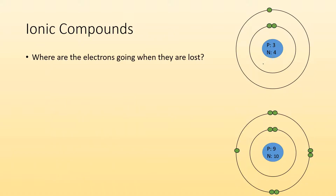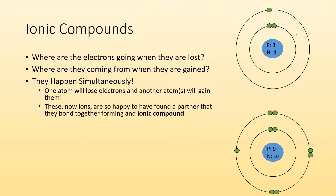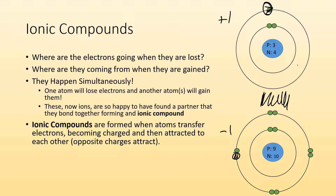So ionic compounds — where are the electrons going when they're lost, and where are the electrons coming from when they're gained? They happen simultaneously: as one atom loses an electron, another atom gains it. So if lithium loses one electron it becomes plus one charged, and if fluorine gains that electron it becomes minus one charged. Opposites attract and they form a bond — we call that an ionic bond. Ionic compounds are formed when atoms transfer electrons, become charged, and are then attracted to each other because opposites attract.